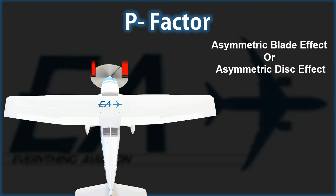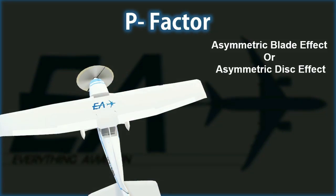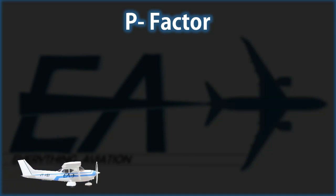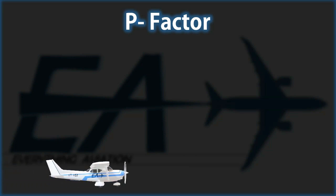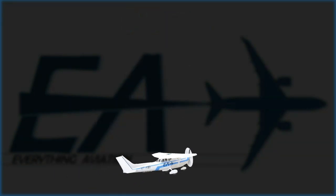It's where a propeller creates more pull or lift on one side, which causes the airplane to yaw. For example, in single-engine propeller aircraft with a clockwise rotating propeller like the Cessna 172, during the climb phase after takeoff or during flight conditions with high power and high angle of attack, it has a tendency to yaw to the left.